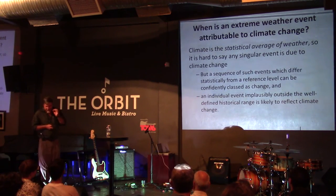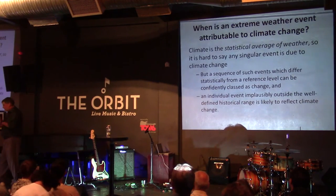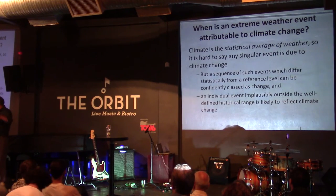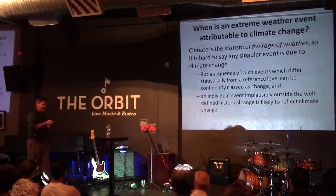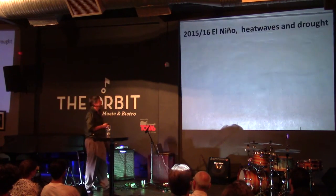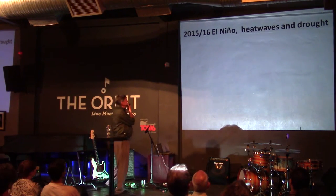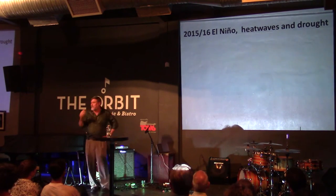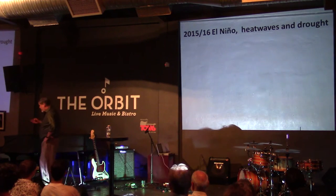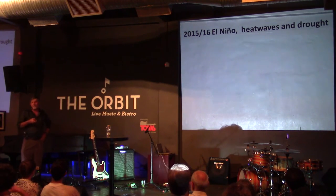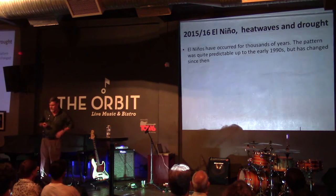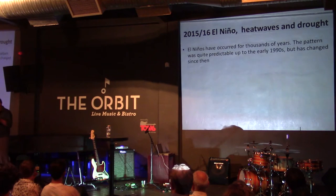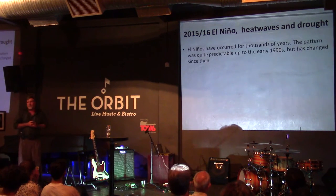You can even do this with an individual event if it is clearly so far out of the historically established distribution that it's implausible it is drawn from that distribution — you could say that event is most likely associated with climate change. El Niños, which are this global perturbation of ocean circulation that propagates through the atmosphere, have occurred for thousands of years. We have great evidence on that.